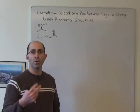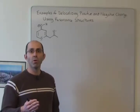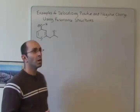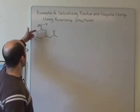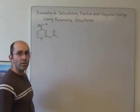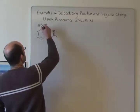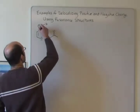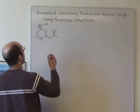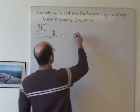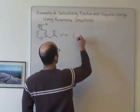Sigma bond electrons do not move when we draw resonance structures. So since there's a pi bond directly attached to that oxygen, we can move those electrons onto the oxygen and draw another resonance structure.